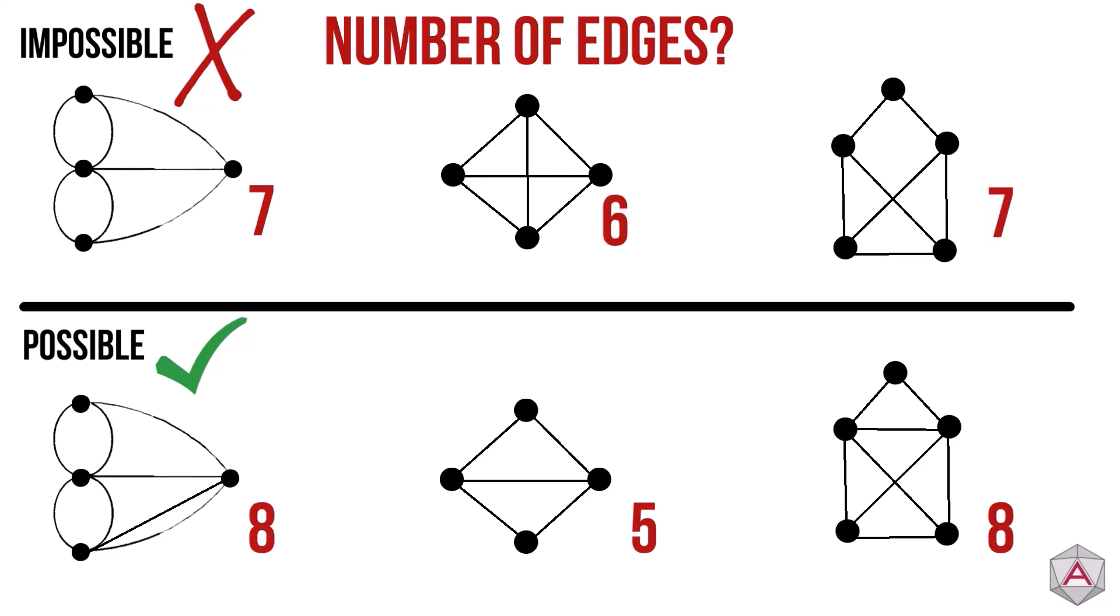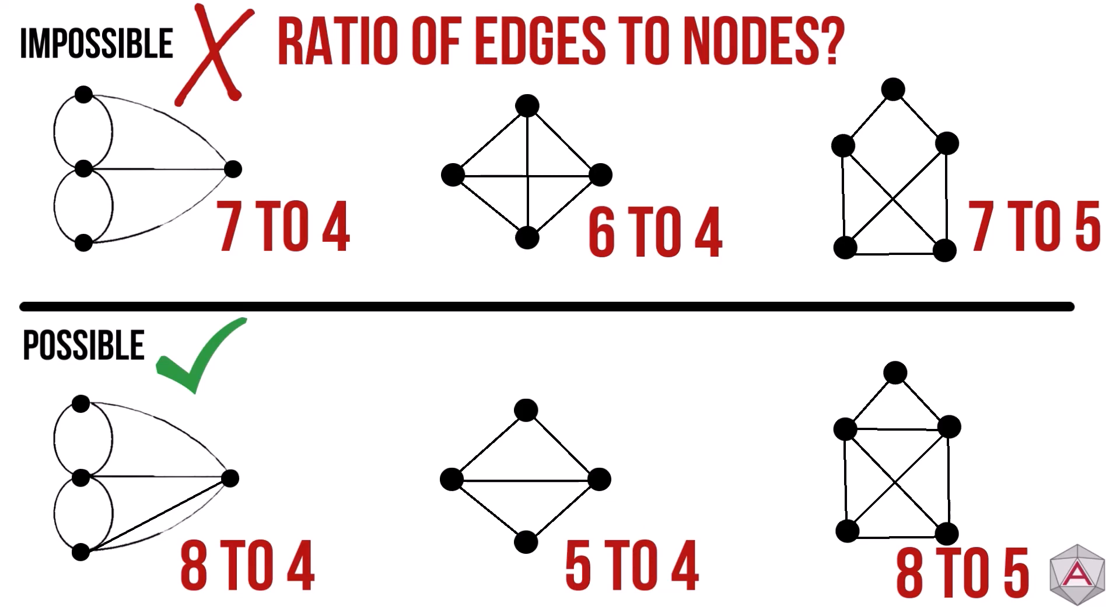Next, you may guess it's the number of edges, but both sides have a mixture of odd and even edges. What about the ratio of edges to nodes? That also doesn't appear to have a correlation either.